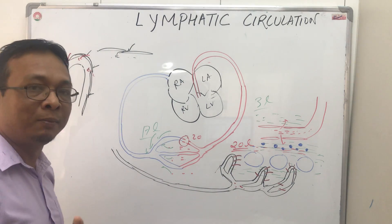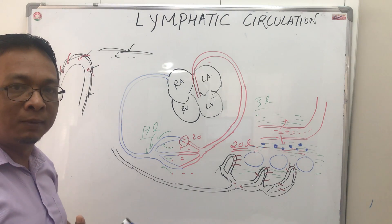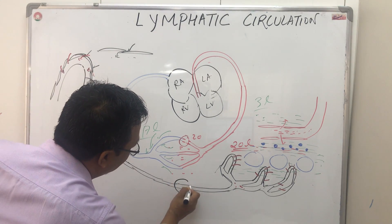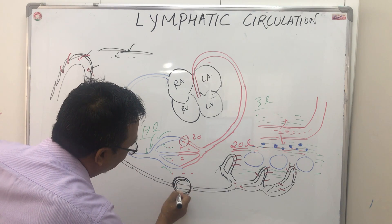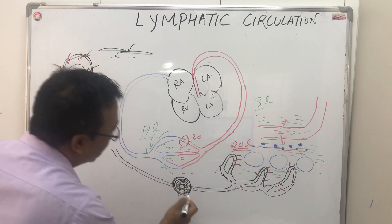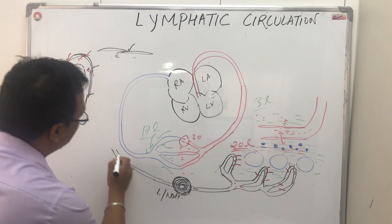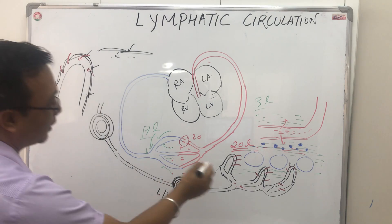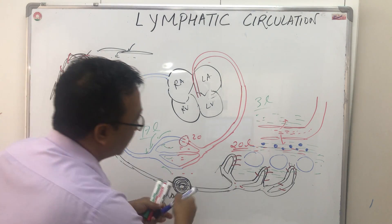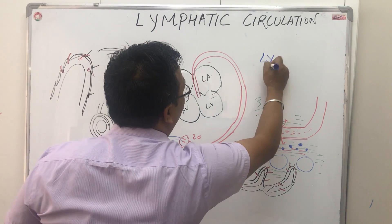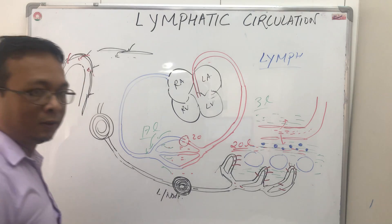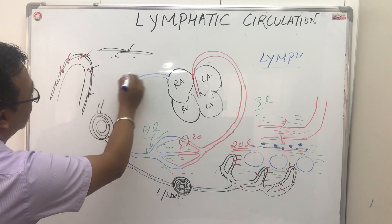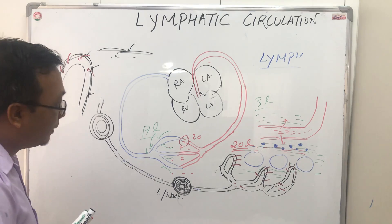Now these lymphatic vessels can't just go and dump directly into the right side of the heart. There is also a checking mechanism — a filter kind of thing, like your washing machine filter — that checks what is coming in. This is called a lymph node. There are plenty of lymph nodes collecting this fluid. The fluid collected into the lymphatic capillaries is called lymph, and this lymph is moving in the upward direction towards the right side of the heart.